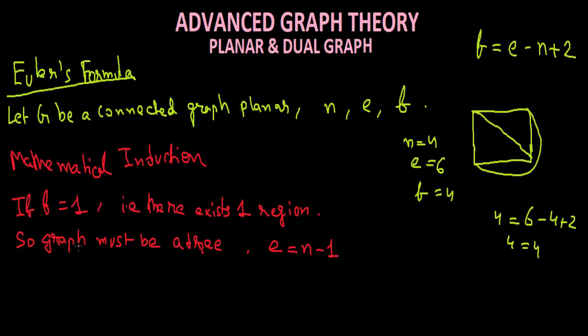And since it is a tree, so e minus n plus 2, the left hand side equals the right hand side. So we're just putting the values. This is 1, we consider f equals 1, so LHS equals RHS. So the result is true for f equals 1.